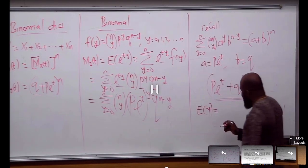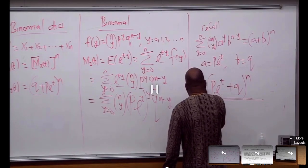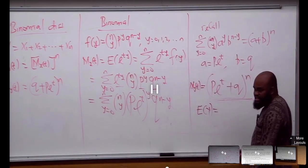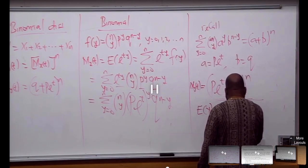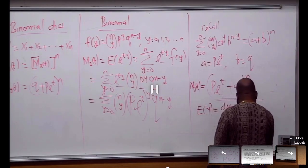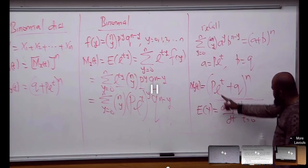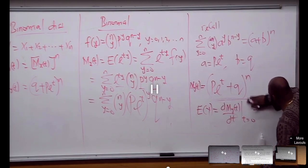Your expected value of Y, if this is m_Y of t, you differentiate. You're going to do d/dt of m_Y(t) and set it to 0. That's what you're going to do here. Let's try it.